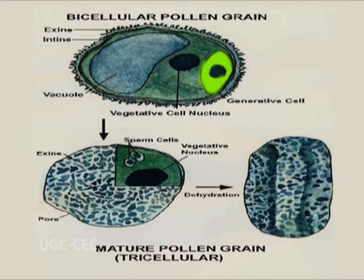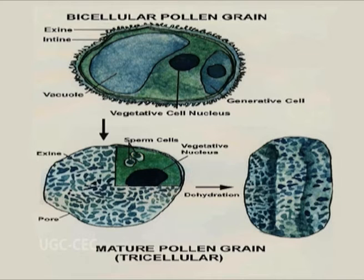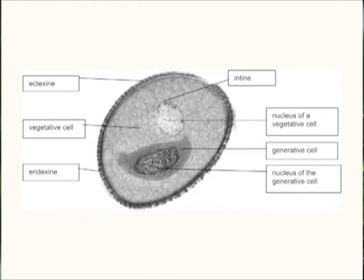The generative cell gradually detaches from the pollen wall and is engulfed by the vegetative cell, forming a unique cell-within-a-cell structure. The engulfed generative cell then divides once more by mitosis to form two sperms or male nuclei that participate in double fertilization, a characteristic feature of seed plants. This division can occur before the pollen is shed or within the pollen tube depending on the species. The vegetative cell is responsible for deposition of the inner wall of the pollen grain, called the intine, and supports growth of the pollen tube on germination.